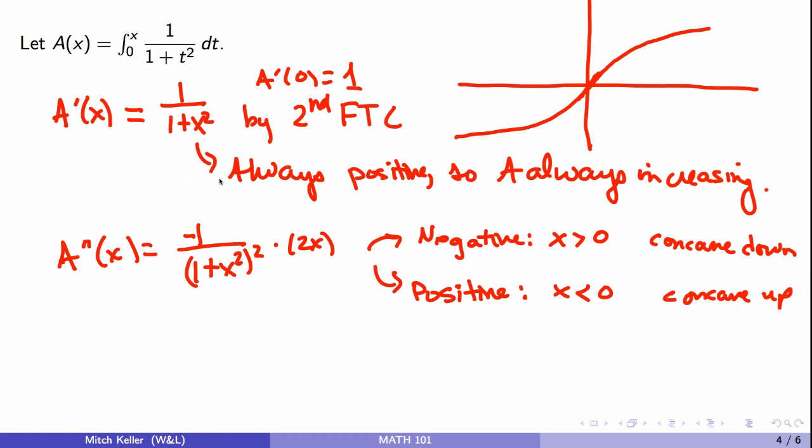We could do a Riemann sum to estimate A of 3 and A of 4 and A of 5, and we would see that it seems like A is increasing by less and less each time, which would be consistent with being concave down or that we're seeing increasing at a decreasing rate.